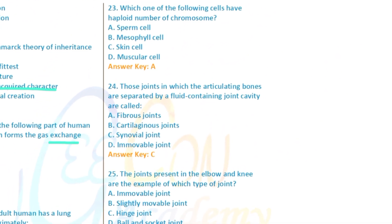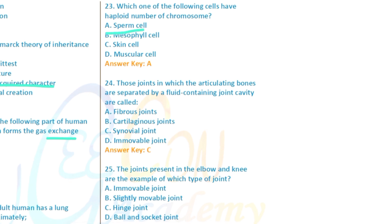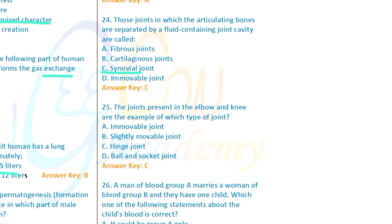Question 23: Which cell has an applied number of chromosomes? Question 24: Joints in which the articulating bones are separated by a fluid-containing joint cavity are called synovial joints — option C is ticked.